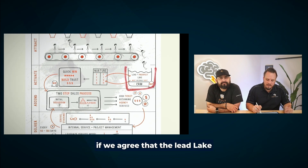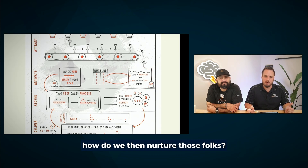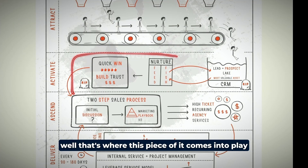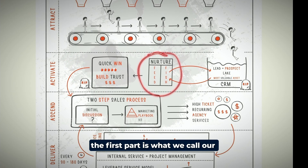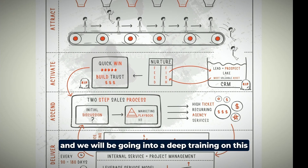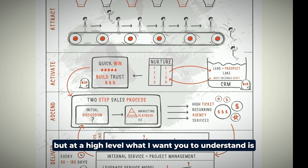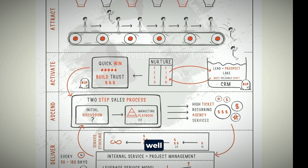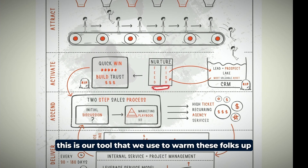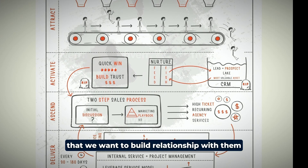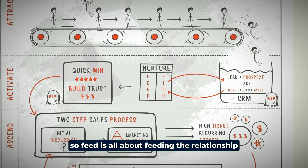So the question becomes: if we agree that the lead and prospect lake is where these people live, how do we nurture those folks? That's where this next piece comes into play. The first part is what we call our Feed and Fish Infinity Campaign — we'll be going into a deep training on this upcoming. At a high level, the folks that land here, especially the ones that are not ready to buy yet — how do we warm them up? This is our tool to warm those folks up, build relationship with them, and make offers to them.